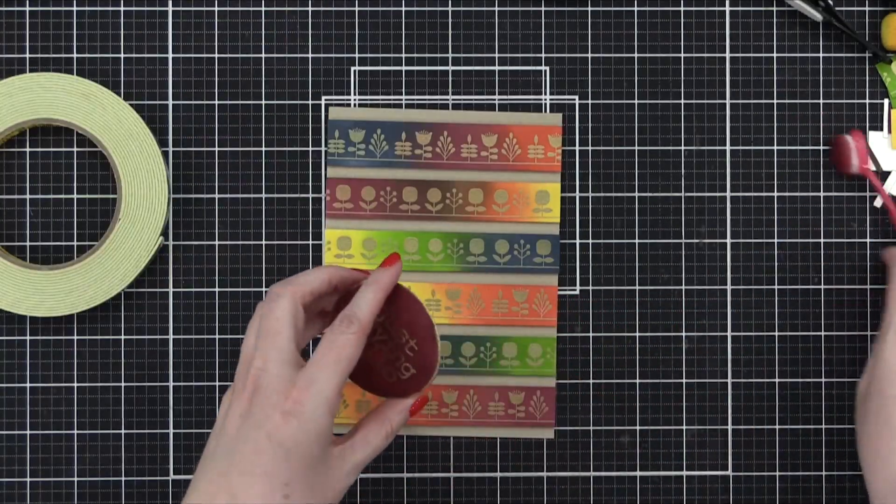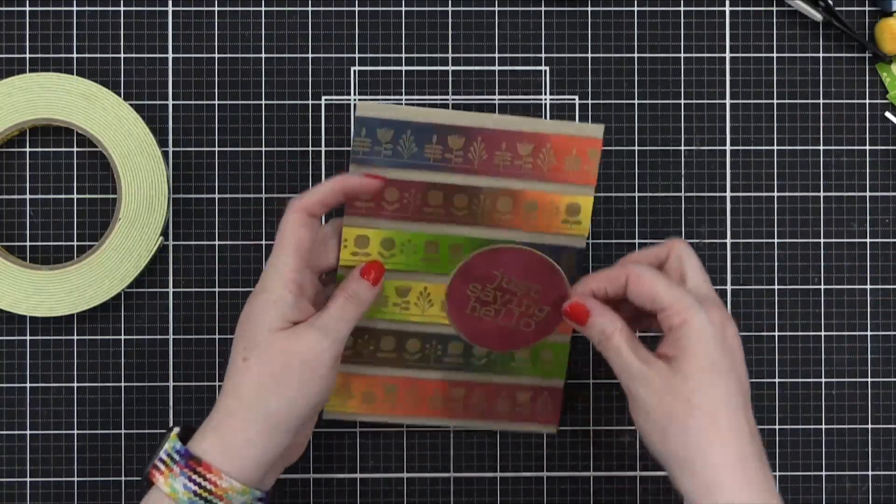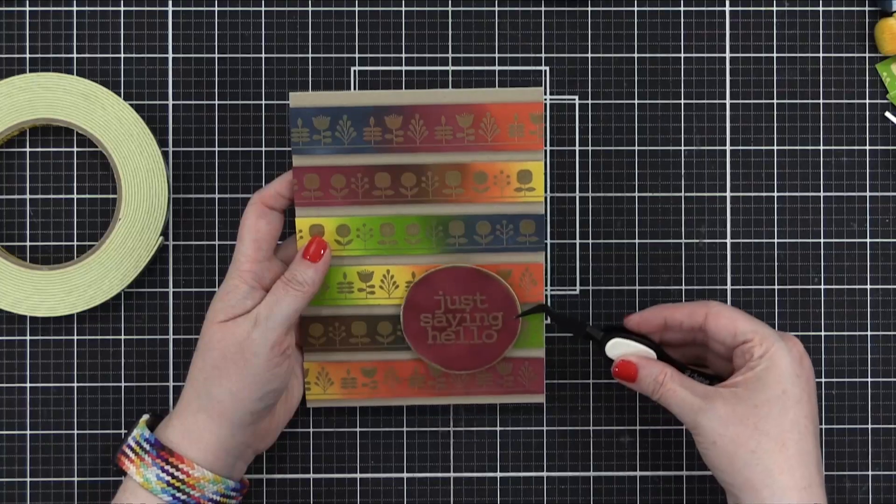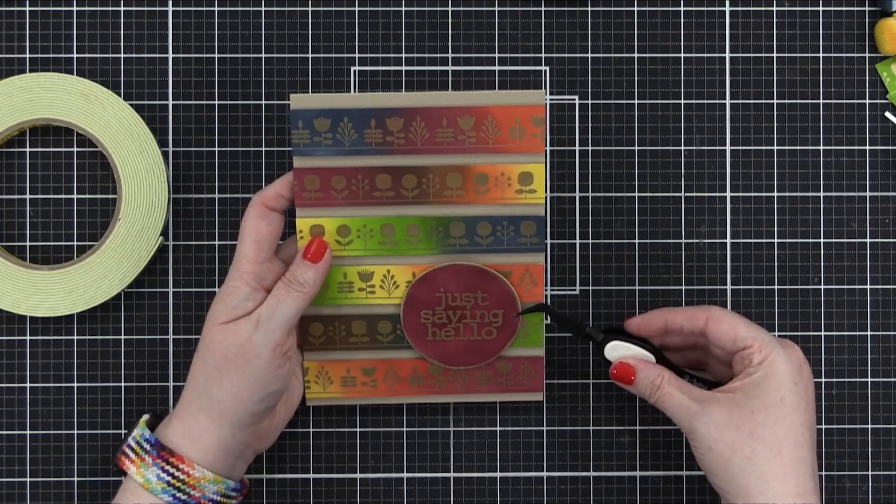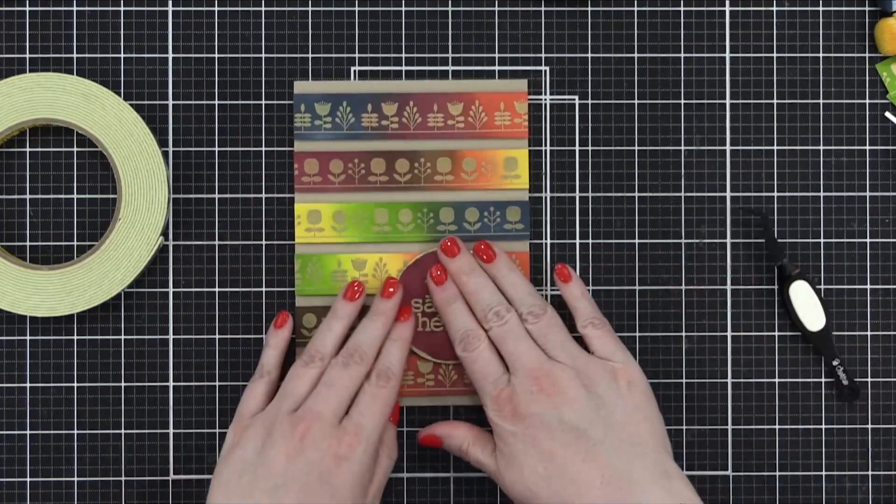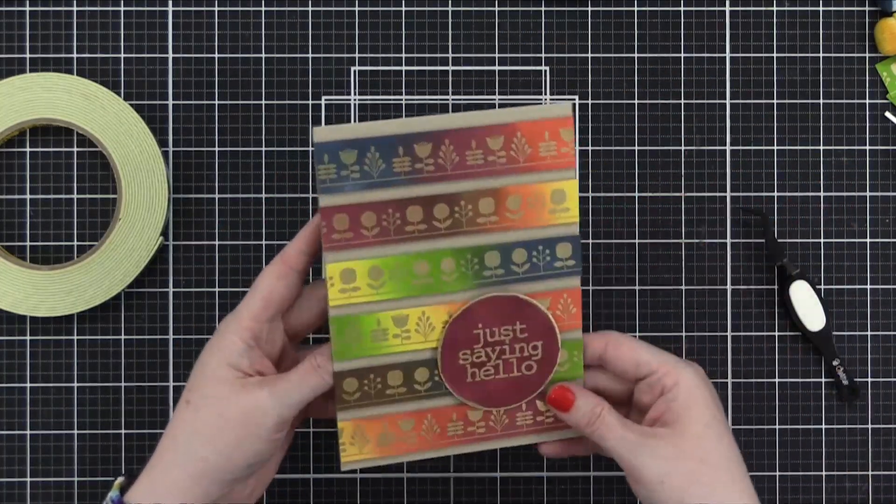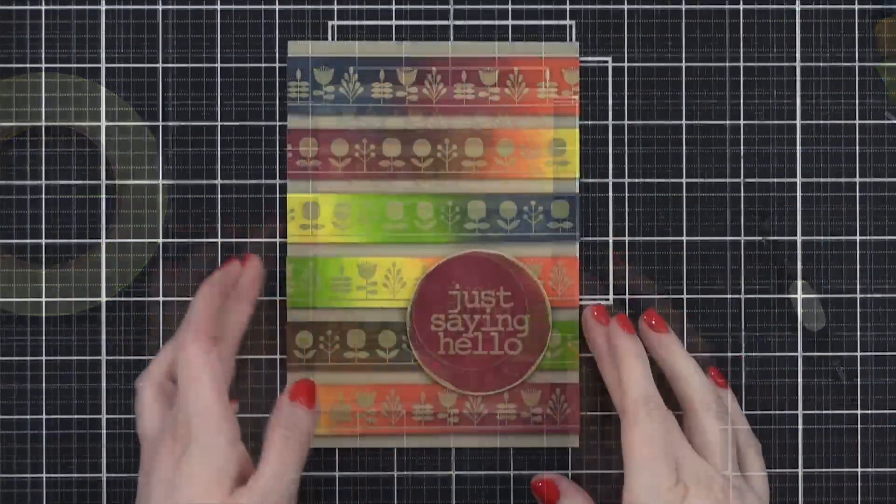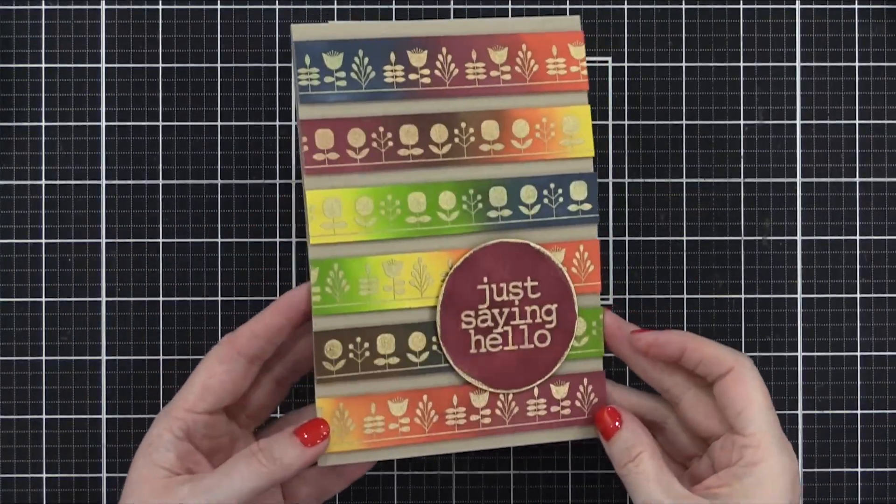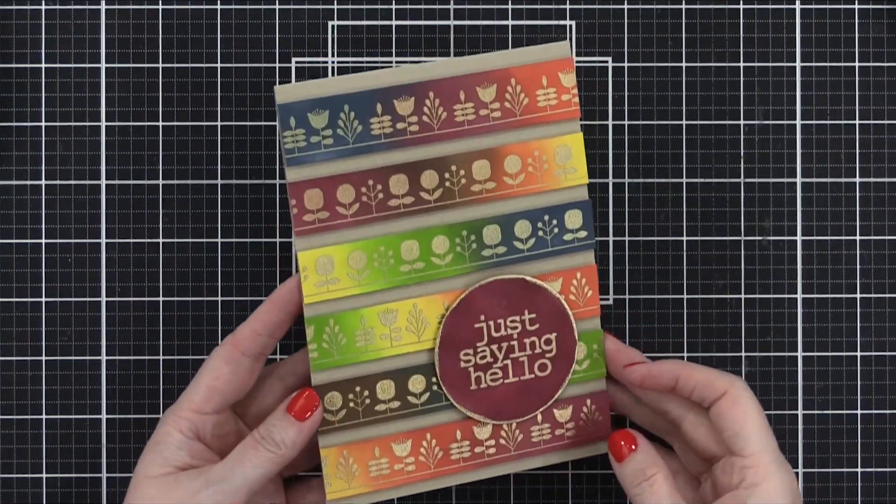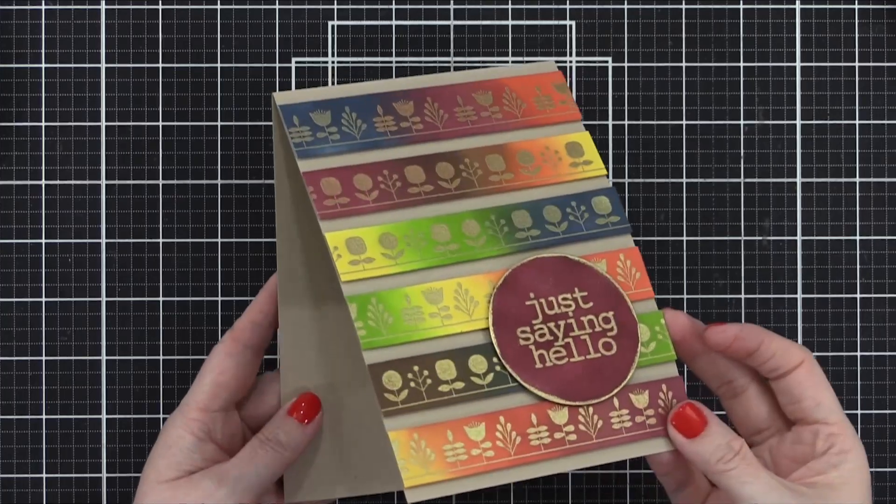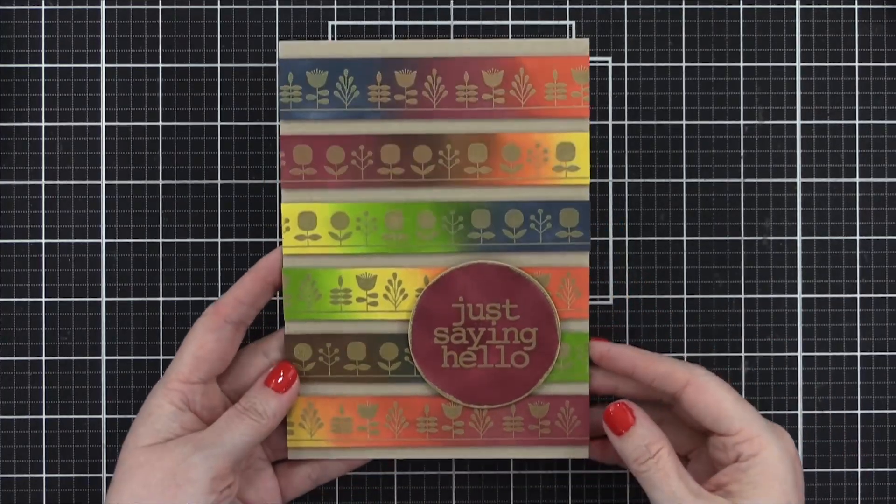I applied some foam adhesive behind that greeting and then once again, use my tweezers to put the placement of the greeting just right. After I press that down, that finishes the card. I love all this ink blending. It's a little bit crazy with all the different colors. I think if you wanted to narrow this down to just three shades, it would be absolutely beautiful as well.